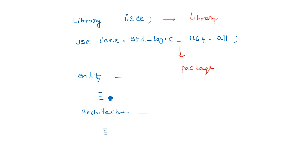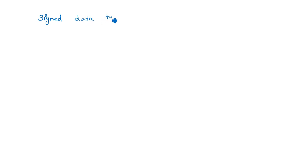There are two different types of data types in terms of signed and unsigned. Unsigned data types don't have any sign, whereas signed data types can hold negative values as well.